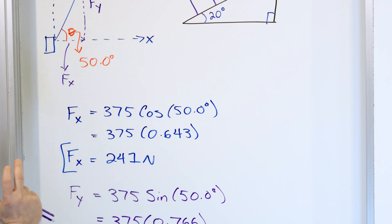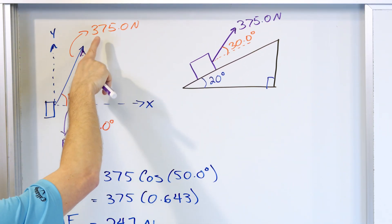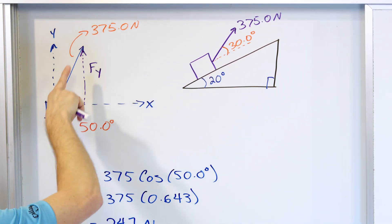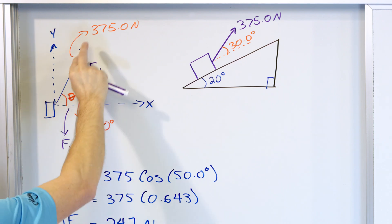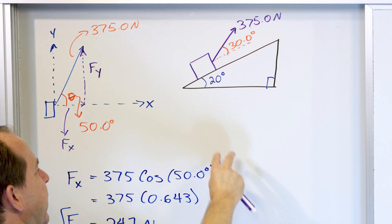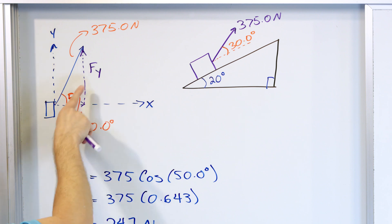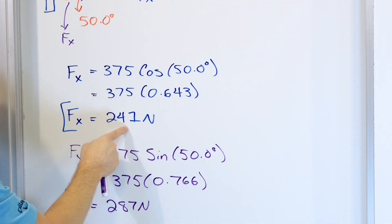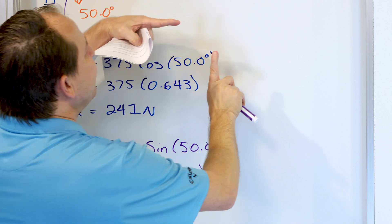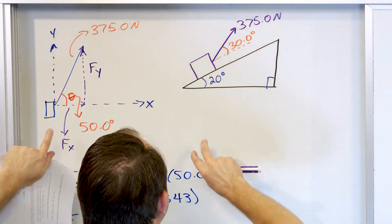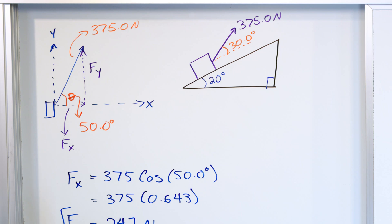So if you have two situations, one situation with a single force acting with this amount of newtons at this angle, then the block will move a certain way. If you have a separate situation with the same block with two separate forces, 241 in the X and 287 in the Y, two forces acting on the block, that block is going to move the exact same way as the original block. Because the equivalent components in the X and Y direction are exactly equivalent to what this original force is doing.